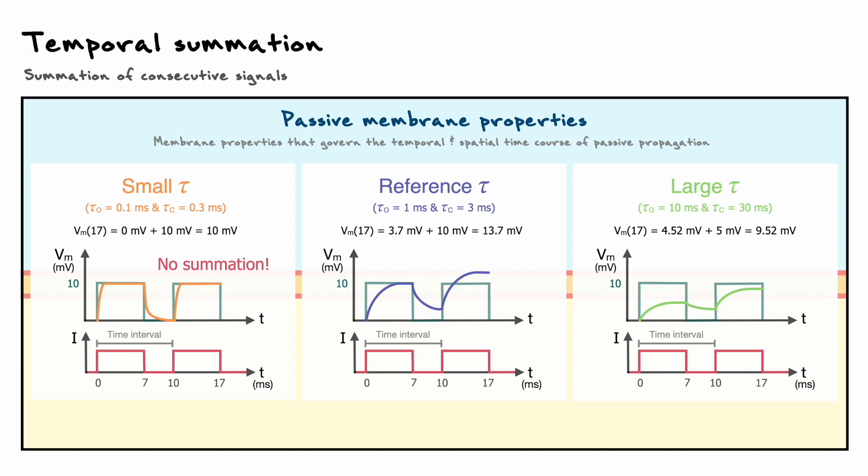Hence, we can say that as a rule of thumb, neurons that have longer time constants are more likely to summate in time, because longer time constants cause longer decay times, and thus more time for signals to summate.